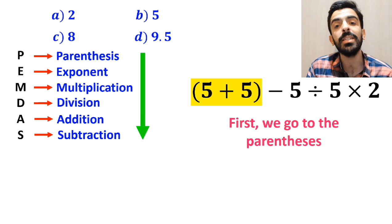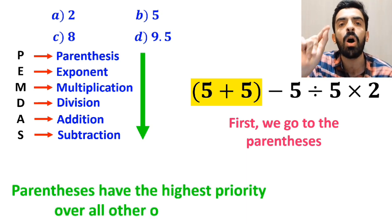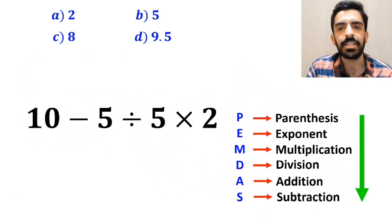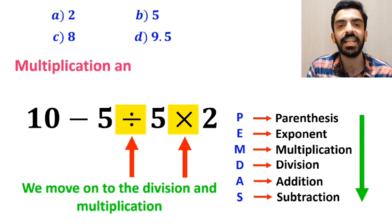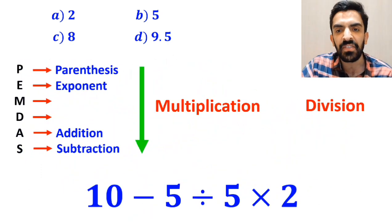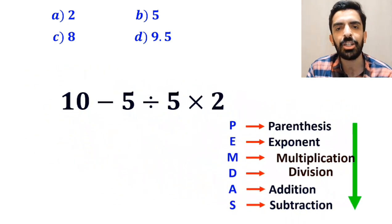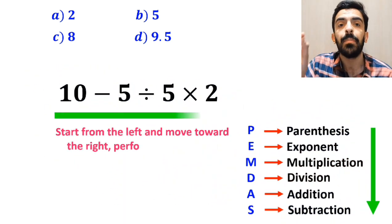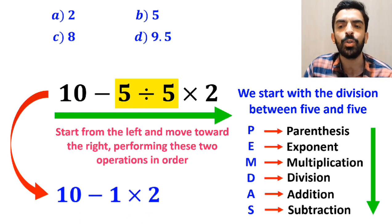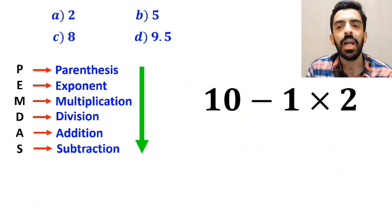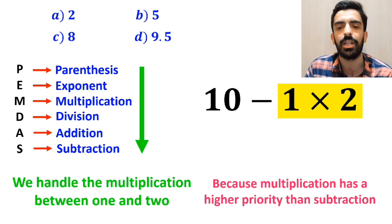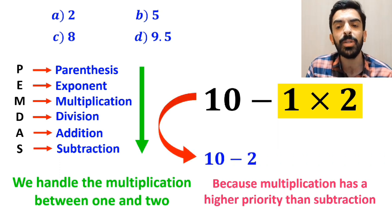First we go to the parenthesis, because according to PEMDAS, parentheses have the highest priority over all other operations. So we rewrite this expression as 10 minus 5 divided by 5 times 2. In the next step, we move on to division and multiplication, which have higher priority than subtraction. Importantly, multiplication and division have exactly the same level of priority, so we start from the left and move right. First we do the division: 5 divided by 5 equals 1, giving us 10 minus 1 times 2. Finally, we handle the multiplication: 1 times 2 equals 2, so the expression simplifies to 10 minus 2, which gives us the answer 8.